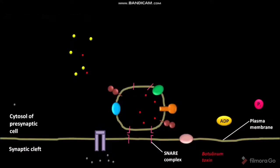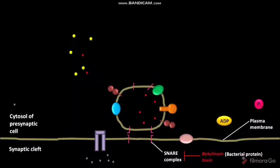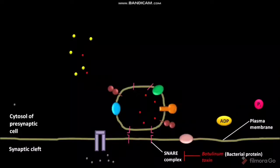The botulinum toxin is a bacterial protein. The botulinum toxin prevents or blocks the assembly of SNARE complexes by proteolytically cleaving the VAMP in the SNARE complex. As a result, the exocytosis of the uncoated synaptic vesicle is prevented.